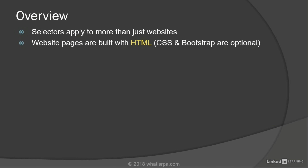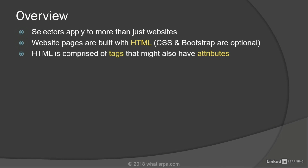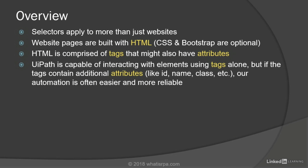As we learned in the previous section, website pages are built with HTML, and more modern websites will also likely incorporate CSS and Bootstrap, although they are optional. Older websites are less likely to use CSS and Bootstrap. We talked about HTML being comprised of tags that might also have attributes. UiPath is capable of interacting with elements using tags alone, but if the tags contain additional attributes like ID, name, or class, then our automation is often easier and more reliable.